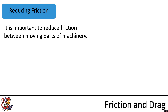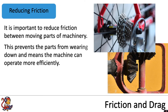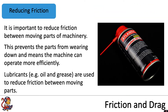It is important to reduce friction between moving parts of machinery. This prevents the parts from wearing down and means the machine can operate more efficiently. Lubricants, for example oil and grease, are used to reduce friction between moving parts.